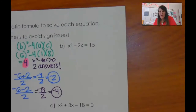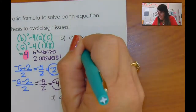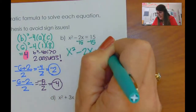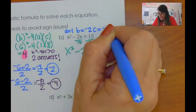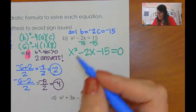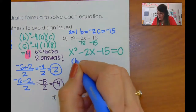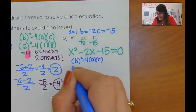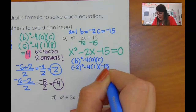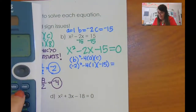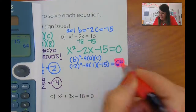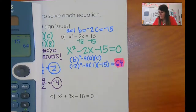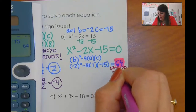This one doesn't equal zero, so I have to move the 15 over first. That gives me x squared minus 2x minus 15 equals zero. A is 1, b is negative 2, c is negative 15. The first thing I'll do is find b squared minus 4ac: negative 2 squared minus 4 times 1 times negative 15. I go to my calculator and I get 64. Since that's greater than zero, I know I'm going to get two answers.